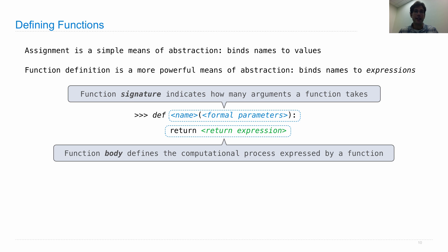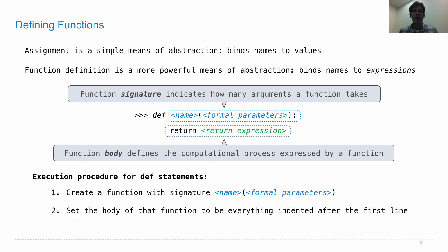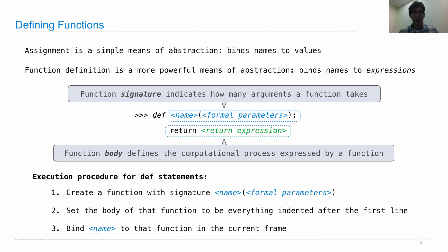There's a procedure for evaluating a def statement. First, every time there's a def statement, we create a new function that has the signature given on the first line. Second, we set the body of that function, which is the code that actually gets executed, to be everything indented after the first line. Finally, we bind the name given to the function to that new function we created in the current frame of our environment.